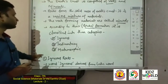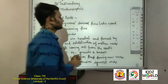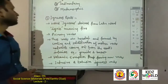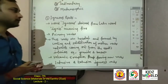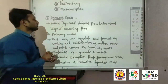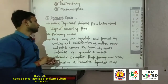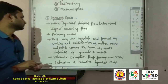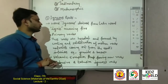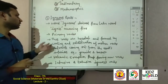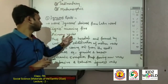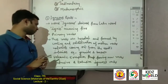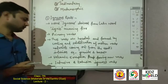The first is igneous rock, means agniya chattane. The word igneous is derived from the Latin word 'ignis', which means fire. So igneous rocks are also called primary rocks or prathmik chattane. These rocks are the hardest and are formed by the cooling and solidification of molten rock materials coming out from the earth's interior.